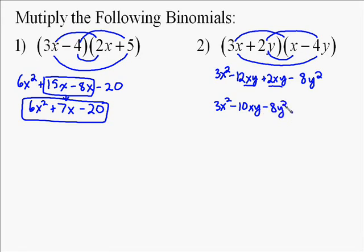So I end up with 3x squared minus 10xy minus 8y squared. And that's how you multiply binomials.